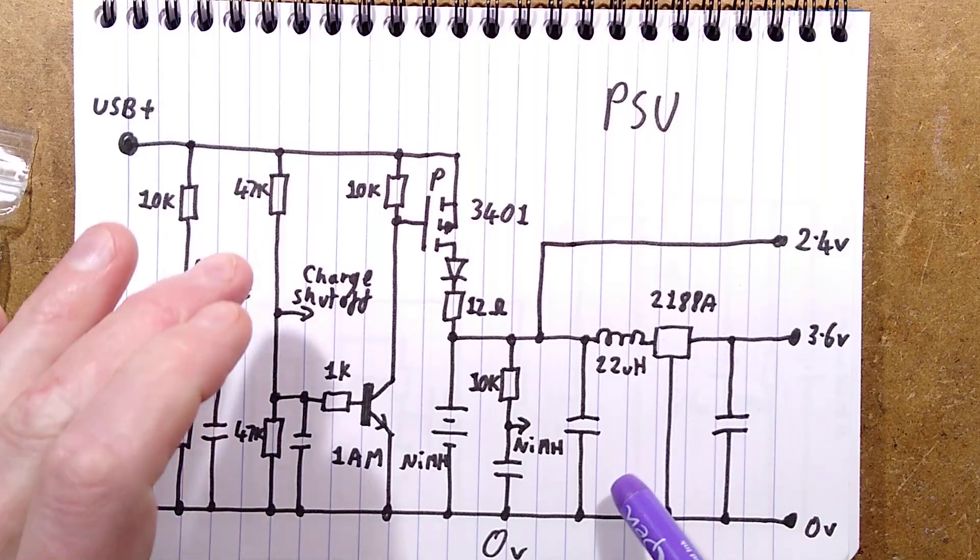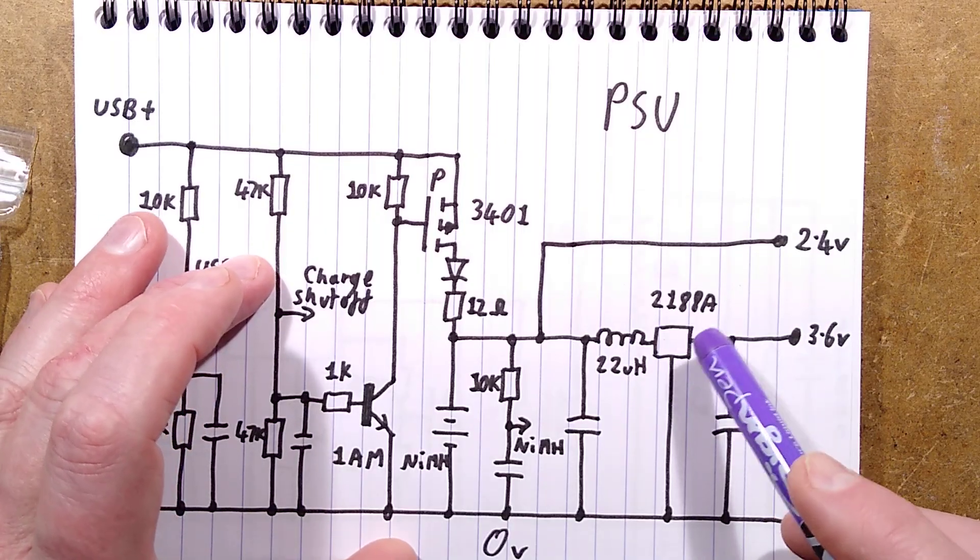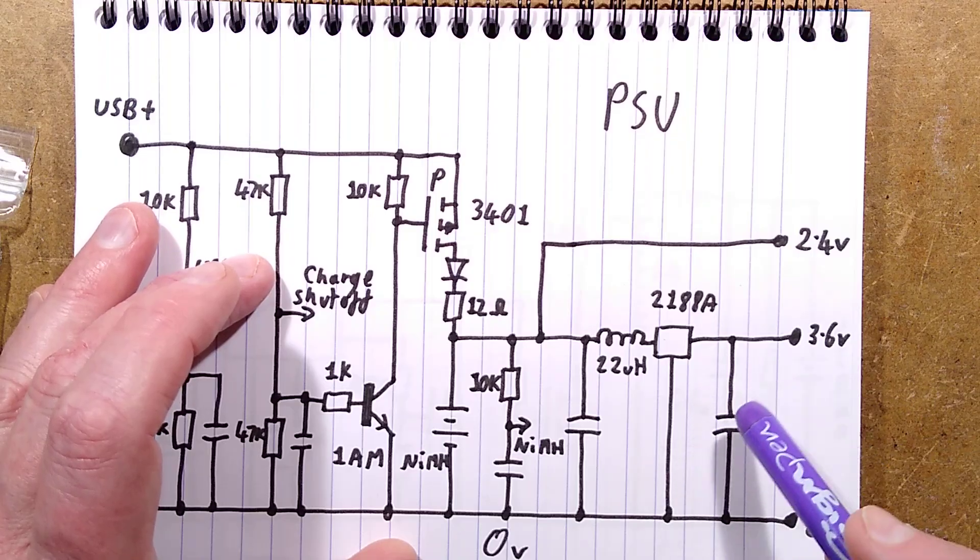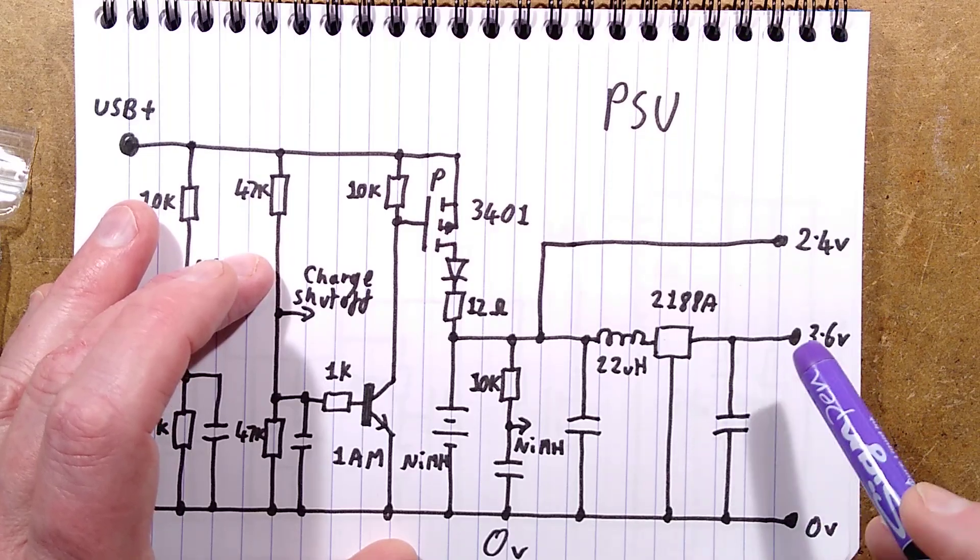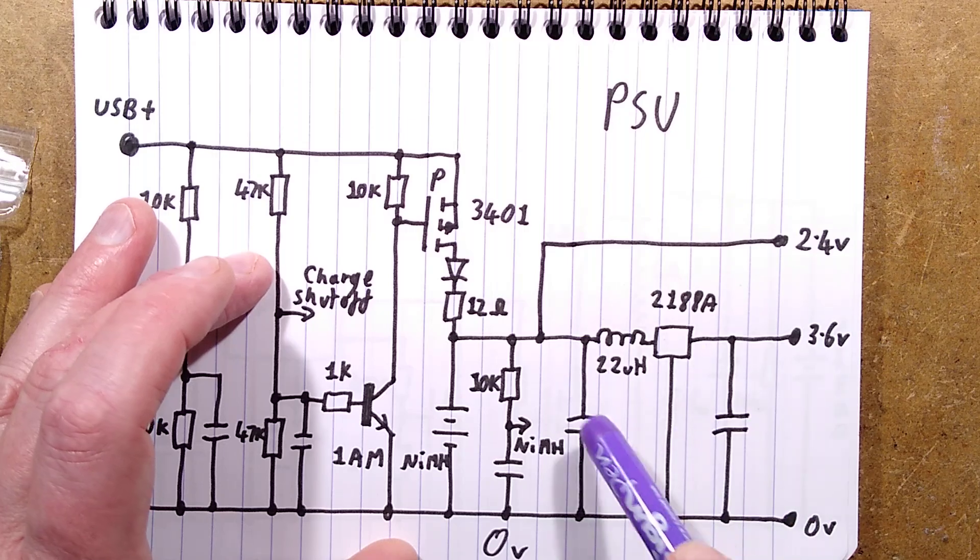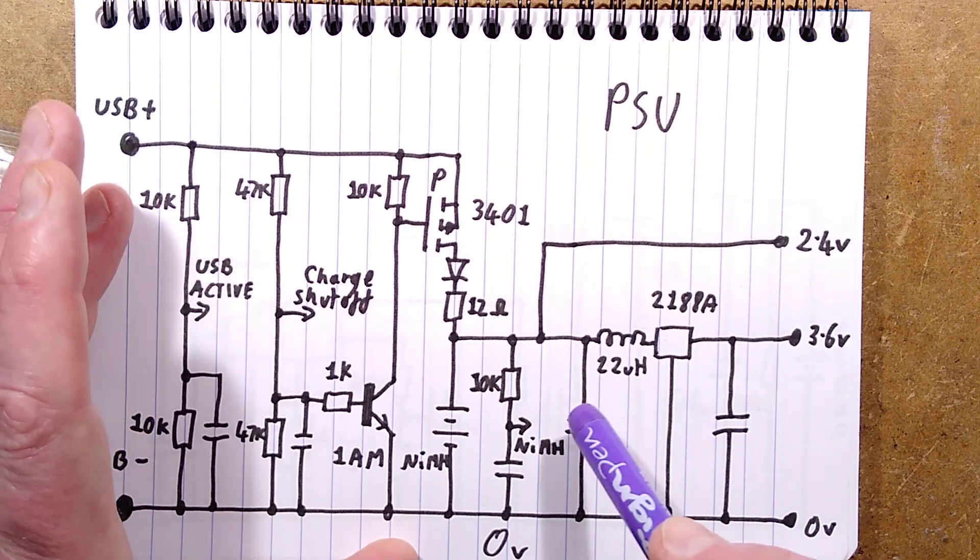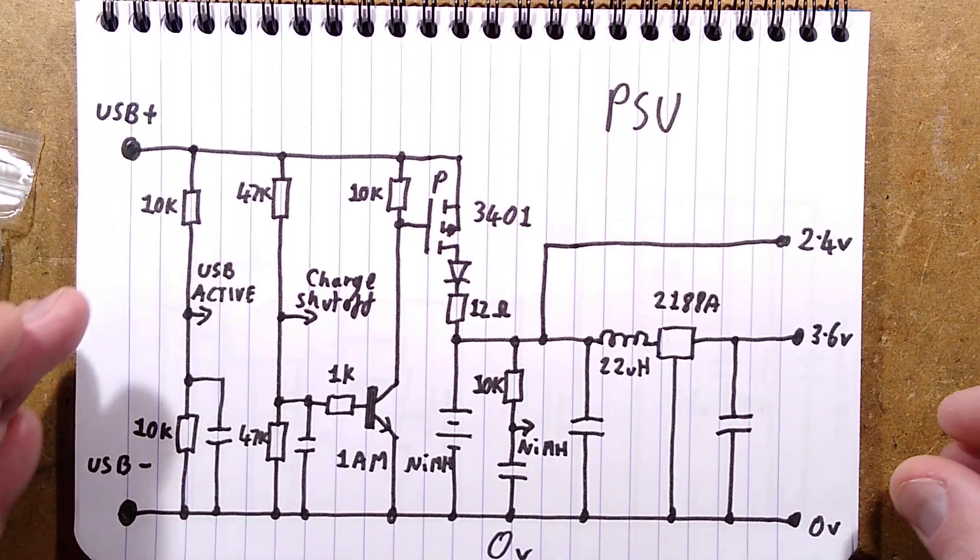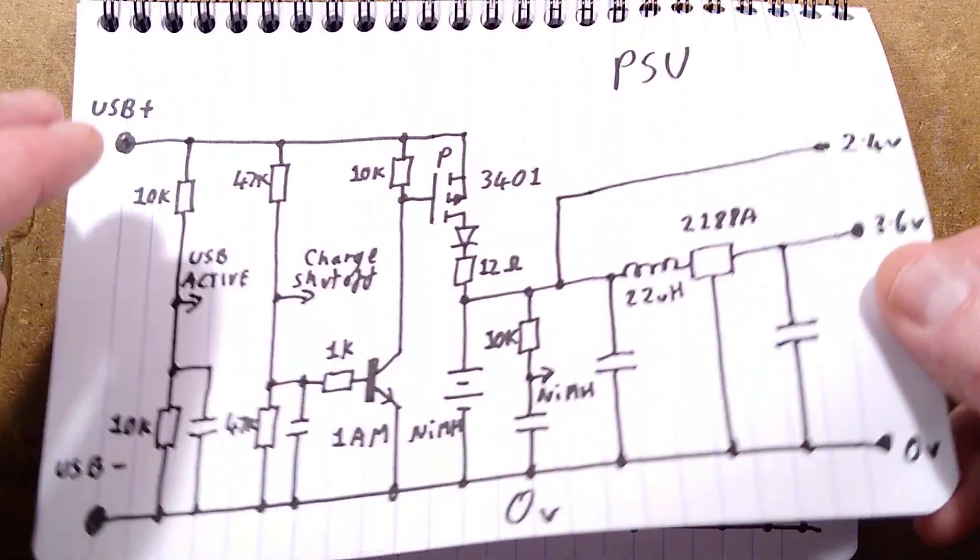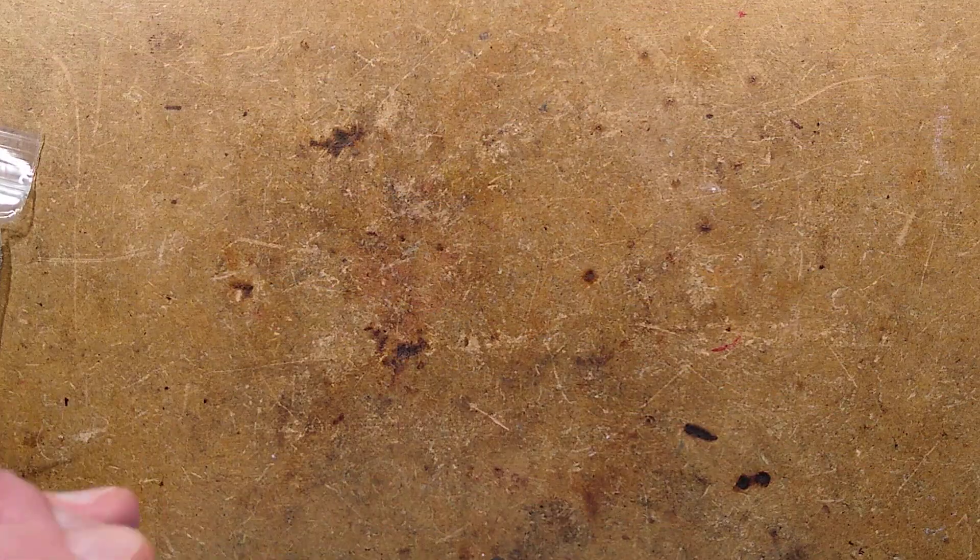As it's being boosted here, because this is a little boost regulator, 2188A, boosts it up to, well, your choice of voltages. This one was set for 3.6 volts, little 22 microhenry inductor and loads of decoupling capacitors. I've abbreviated it. I've not shown all the decoupling capacitors. They're everywhere. As you'd expect. Anything else worth mentioning in power supply? Not really. Let's go to the exciting, spicy bit.